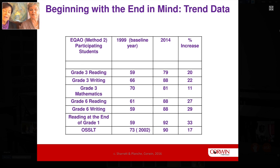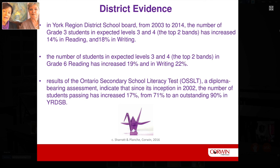The next example is from a district school board, and we see outstanding achievement gains in the district we've both worked in. For us, this achievement comes from the consistency of practice across classrooms in every school. It has been because of teachers co-laboring with each other, with teacher leaders, and with leaders that the increase in student achievement has been as profound as it has been.